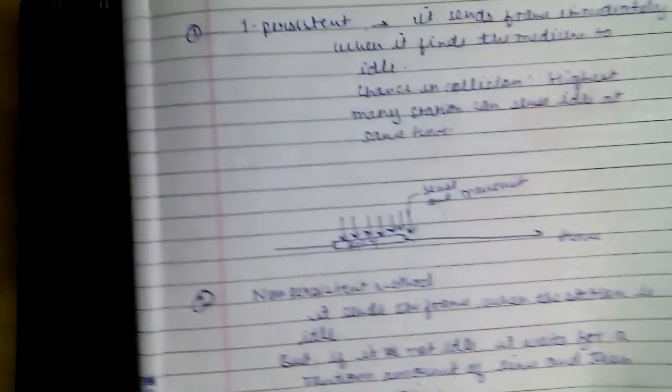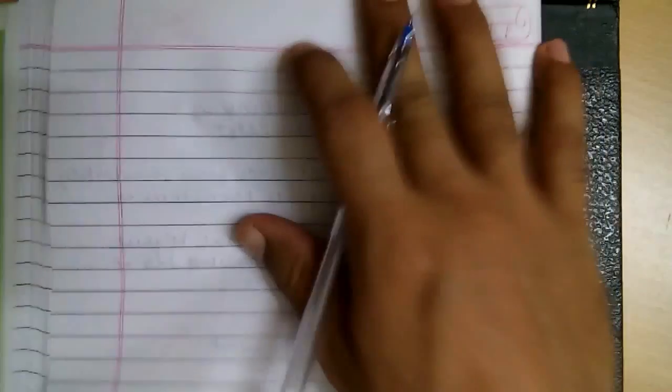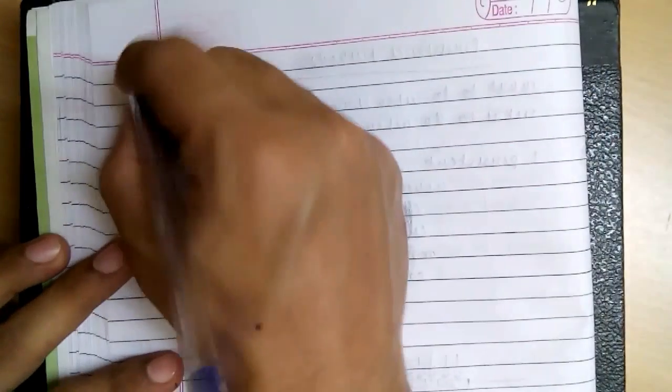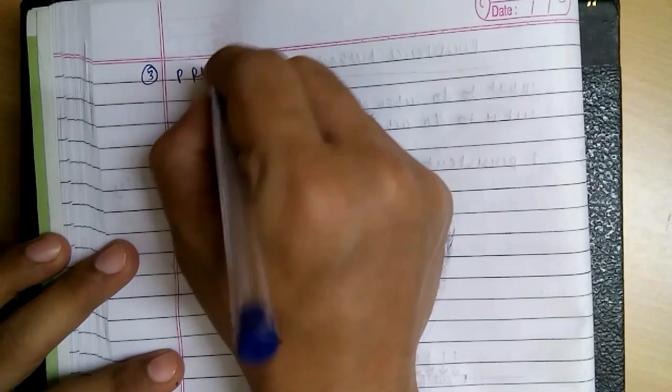So as you can see it could have transmitted here, so the efficiency is less in this protocol. So there is non-persistent, and the next one is P-persistent.